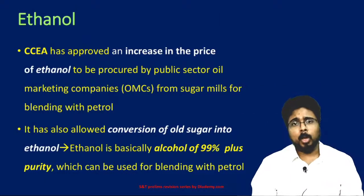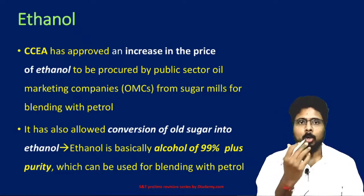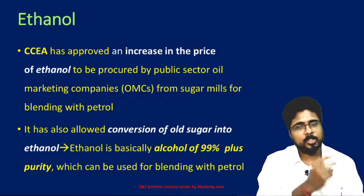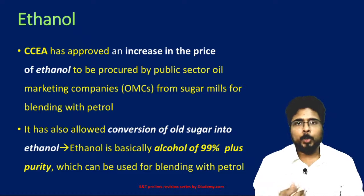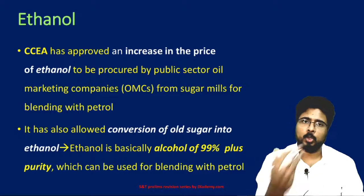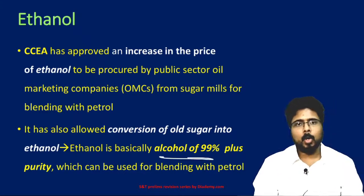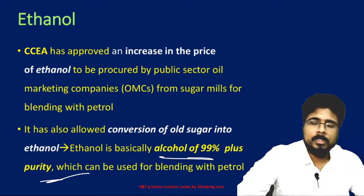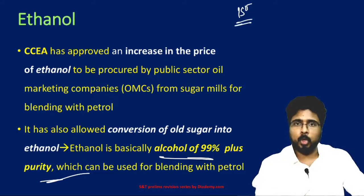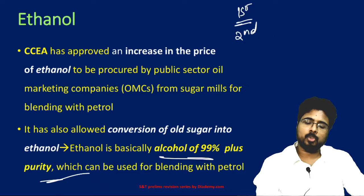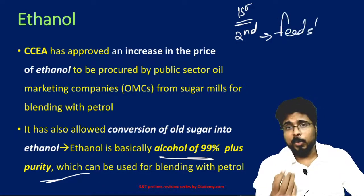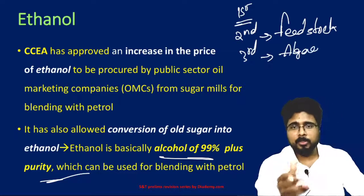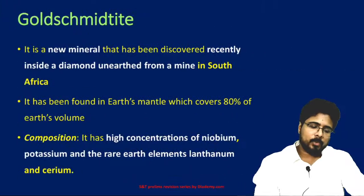Next, ethanol. Recently the prices of ethanol procured from sugar mills have been increased. This ethanol is being used to blend into petrol. There are first generation, second generation, and third generation ethanol. This ethanol is produced from waste in sugar industries and is 99% alcohol purity, which can be used for blending with petrol. These are first generation biofuels — produced from food crops. Second generation biofuels are produced from feedstock, meaning non-food crops. Third generation biofuels are produced from algae.